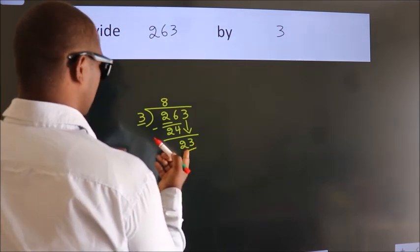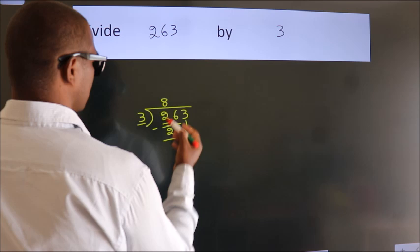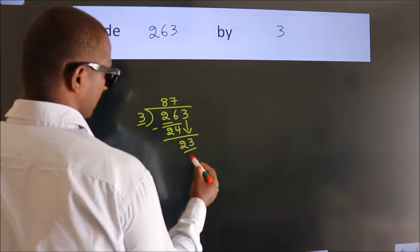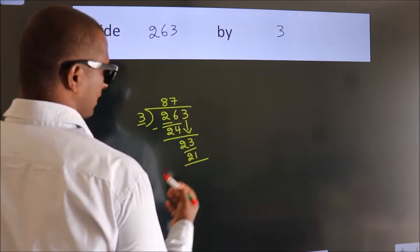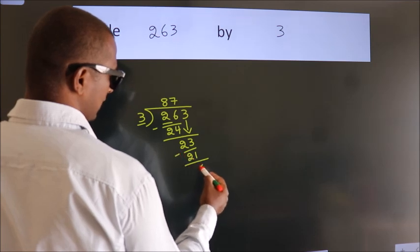A number close to 23 in 3 table is 3 7s, 21. Now, we subtract. We get 2.